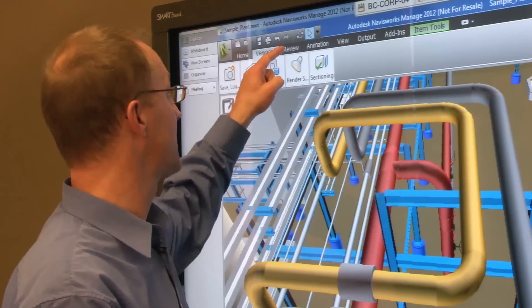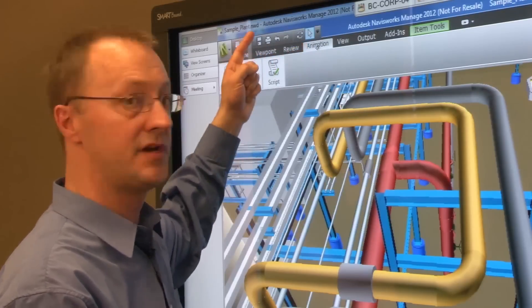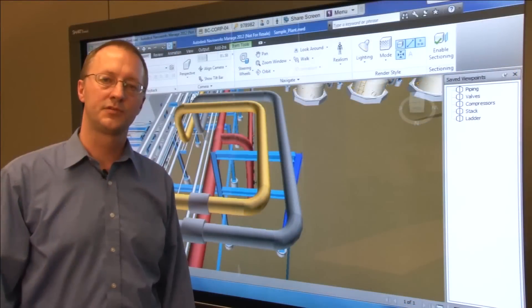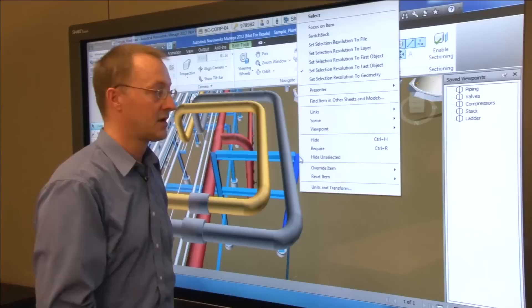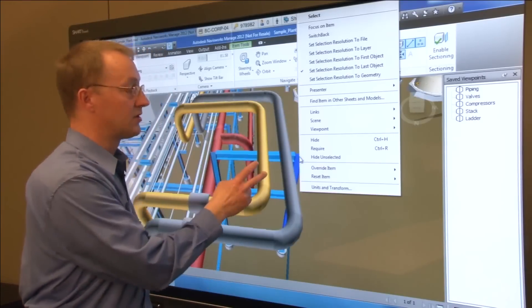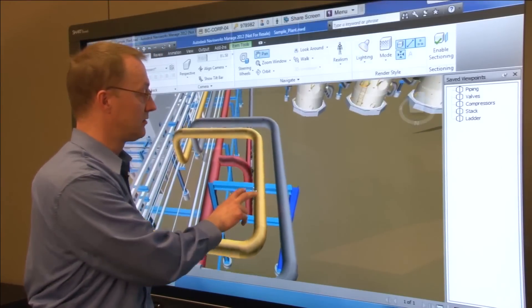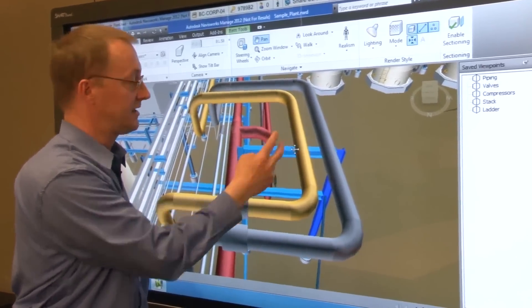With smart touch recognition your finger acts just like a mouse to select menu items and tools within Navisworks. A simple two-finger gesture acts as your right mouse click. Using basic two-finger gestures I can also manipulate the model to get to the image that I wish to review with the design team.